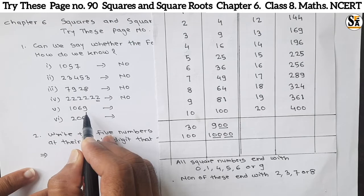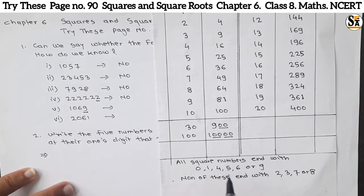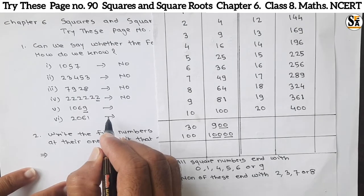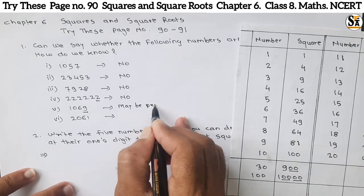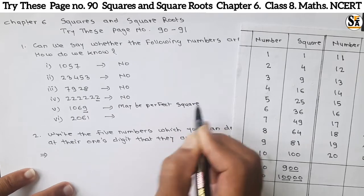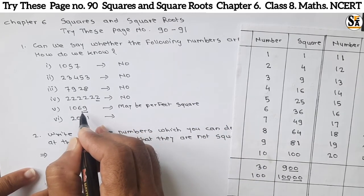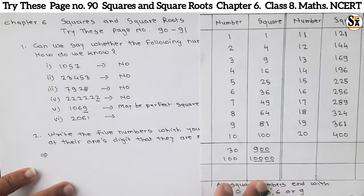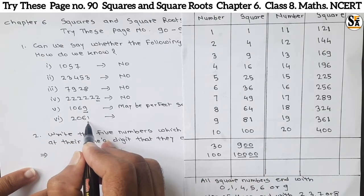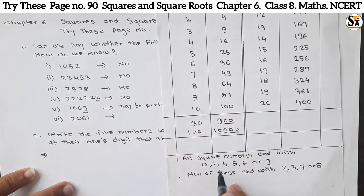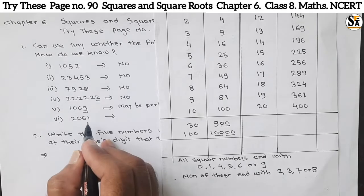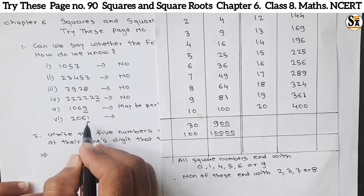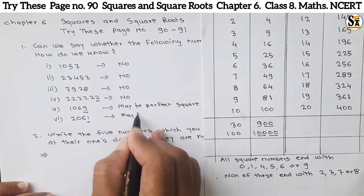Now see 1069. Here the unit place is 9. We have seen that perfect squares can end with 9 also, so this number may be a perfect square number. It is not sure, but there are some chances because square numbers may end with 9. Next: 2061. Here the unit place is 1, and since perfect square numbers end with 0, 1, 4, 5, 6, or 9, the number 2061 may be a perfect square number.